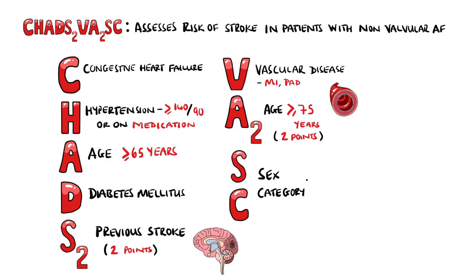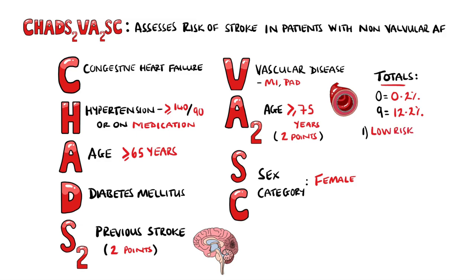SC stands for sex category, meaning females, and this also awards 1 point. As a comparison of the totals, a CHADS-VASC score of 0 estimates an annual stroke risk of 0.2%, while a CHADS-VASC of 9, which is the maximum, is estimated as an annual risk of 12.2%. A score of 0 for a male, or 1 for a female, is considered low risk.